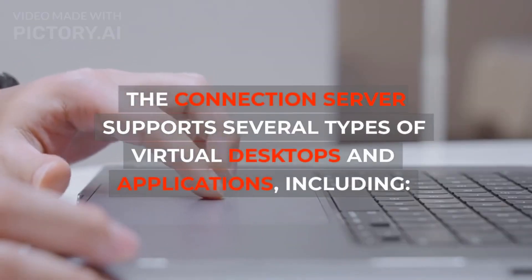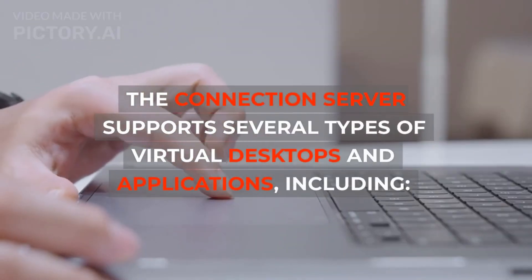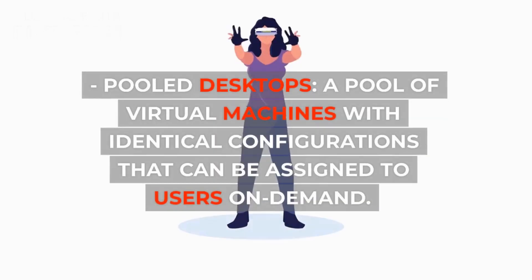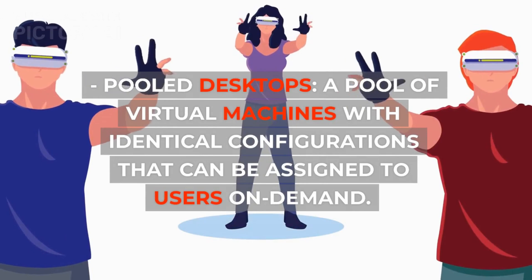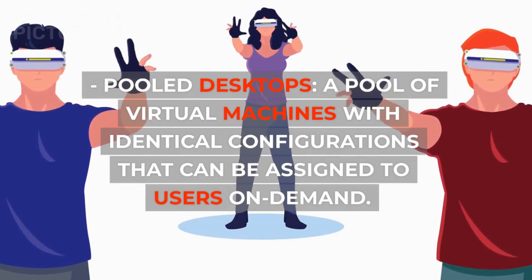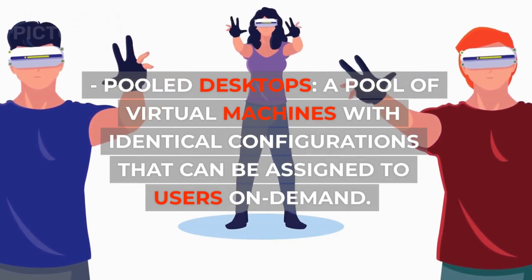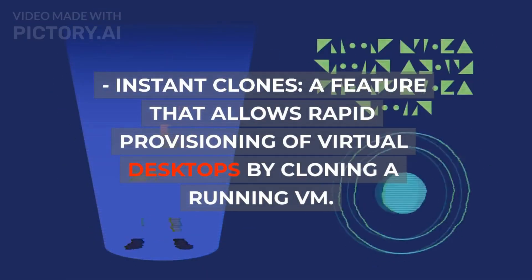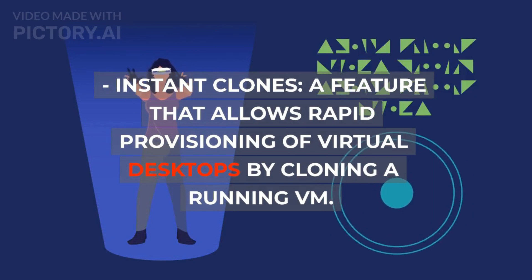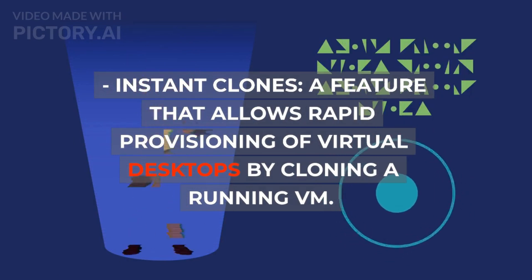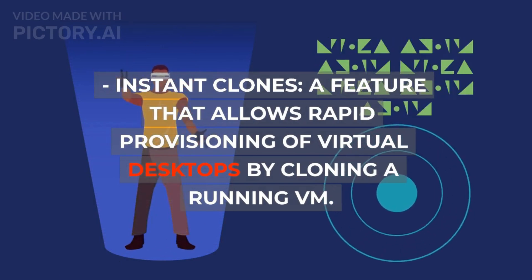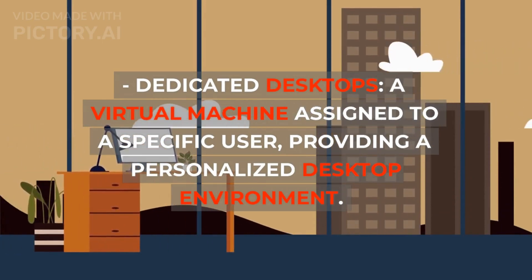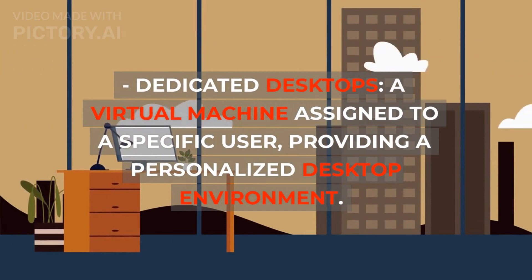The Connection Server supports several types of virtual desktops and applications, including: Pooled Desktops — a pool of virtual machines with identical configurations that can be assigned to users on demand; Instant Clones — a feature that allows rapid provisioning of virtual desktops by cloning a running VM; and Dedicated Desktops — a virtual machine assigned to a specific user, providing a personalized desktop environment.